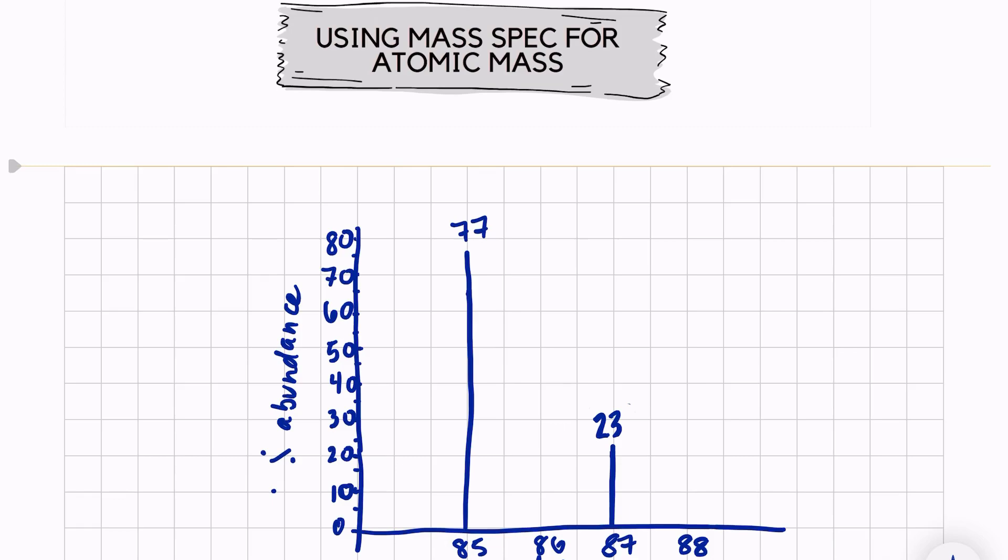If we're looking at our data, we have two peaks. One has a mass of 85 and is 77 percent abundant, and another peak has a mass of 87 and is 23 percent abundant. We're going to use our normal formula for average atomic mass.